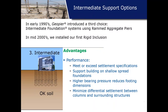In the early 1990s, Geopier introduced and pioneered intermediate foundation systems, starting with rammed aggregate piers. By the mid-2000s we developed our first rigid inclusion product. Ground improvement in general has significant advantages over deep foundations — it still provides the settlement control projects need while allowing you to retain shallow foundation support. You do not have to convert your foundations to a pile cap or structural slab, and often we can increase bearing pressures beyond what the natural soils can accommodate.